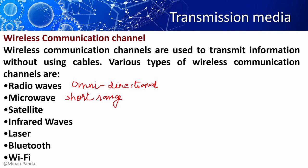Electromagnetic waves having frequencies between 1 and 300 GHz are called microwaves. Microwaves are unidirectional. Satellite communication is used in mobile and wireless communication applications. Infrared transmission uses infrared light to send data, and its frequency range is from 300 GHz to 400 Terahertz. Laser transmission uses free space as a medium for data transmission. It requires direct line of sight and is unidirectional like microwave, but has much higher speed than microwave.